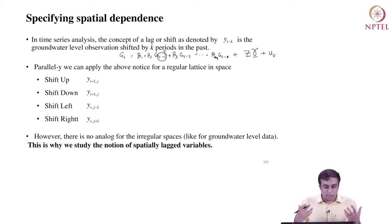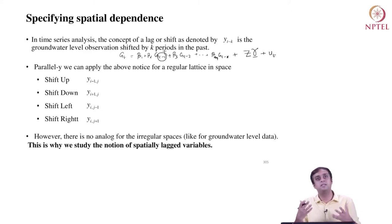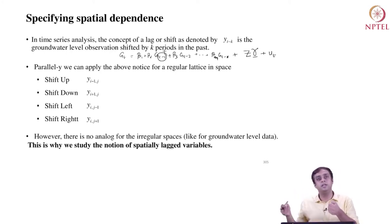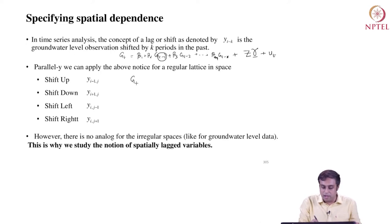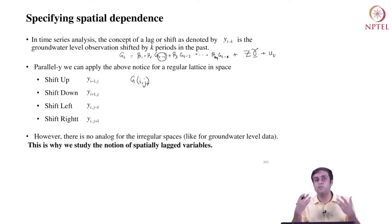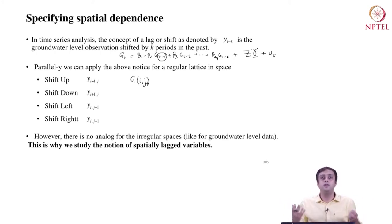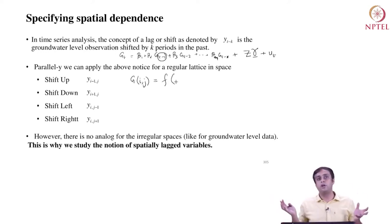In the case of a spatial lag, we can think of having lags in the northward direction, the southward direction, the westward direction, and the eastward direction — that is, shift up, shift down, shift left, and shift right. Corresponding to g_t, we now have g_{i,j} where i and j are x, y coordinates. Instead of working with one index, I work with two indices because groundwater data are observed in a two-dimensional real space. This is then modeled as a function of the neighborhood groundwater levels — that is where the spatial spillovers come from.